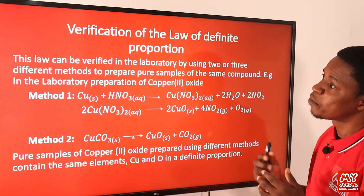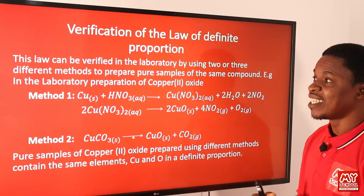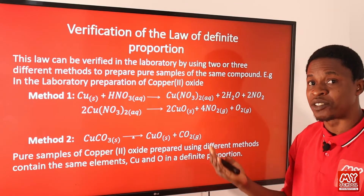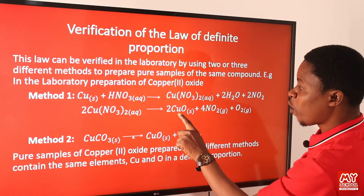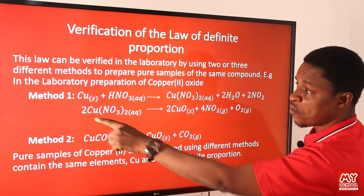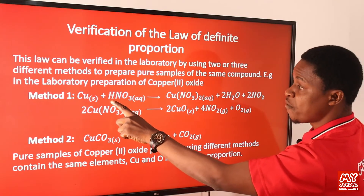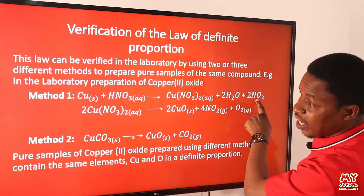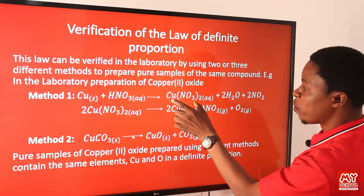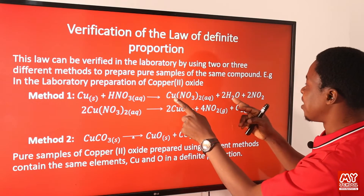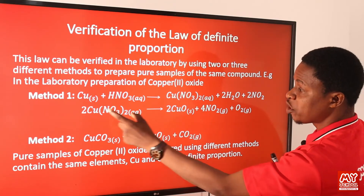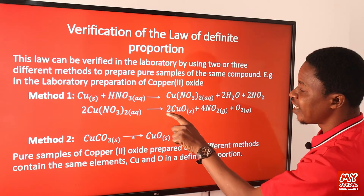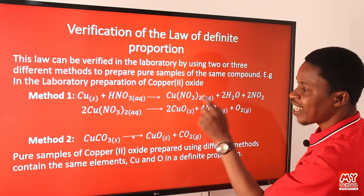The law of definite proportion can be verified in the laboratory by using two or more different methods to prepare the same compound. For example, to prepare copper oxide: in method one, we react copper with trioxonitrate(V) acid (HNO3) to produce copper nitrate, water, and nitric oxide. The copper nitrate is then heated further to produce copper oxide, NO2, and O2. Copper oxide is our target product.